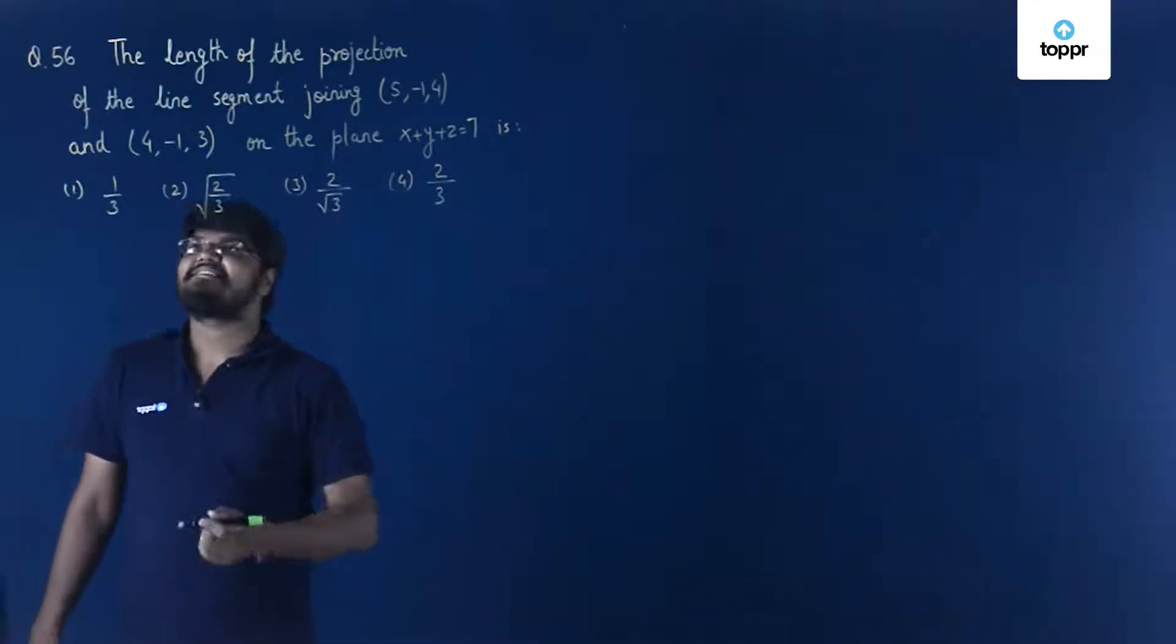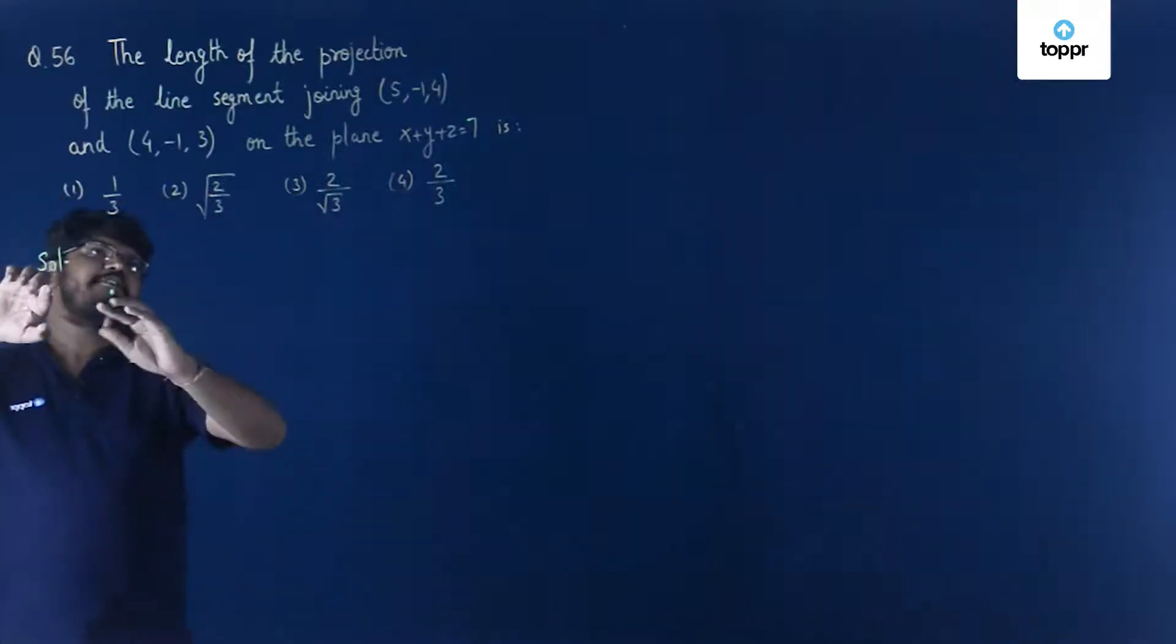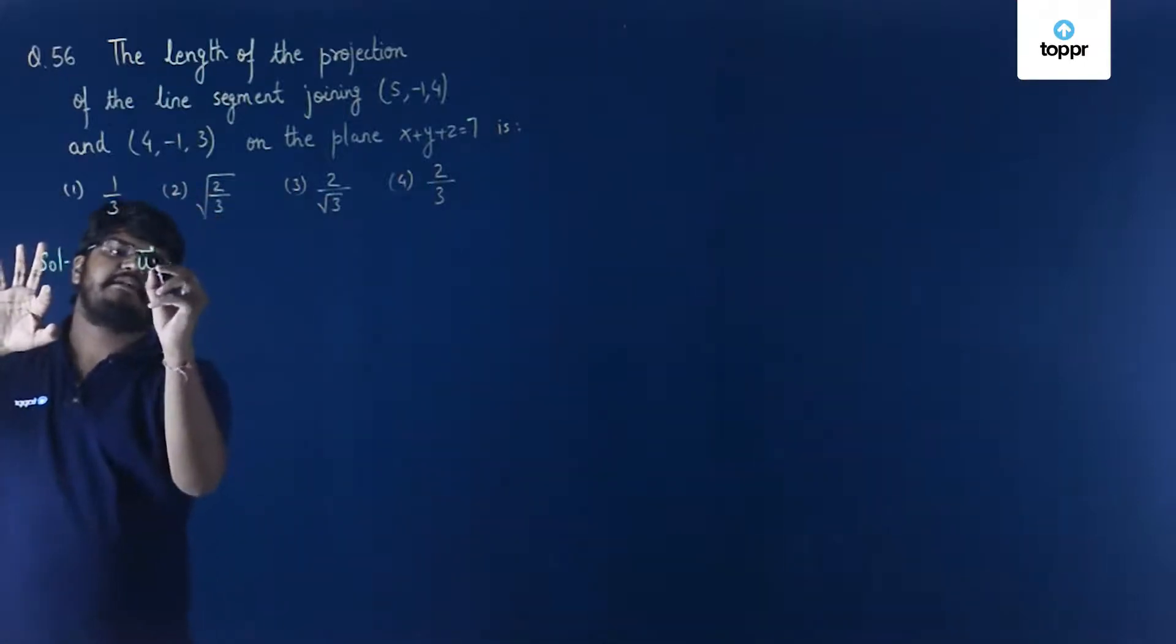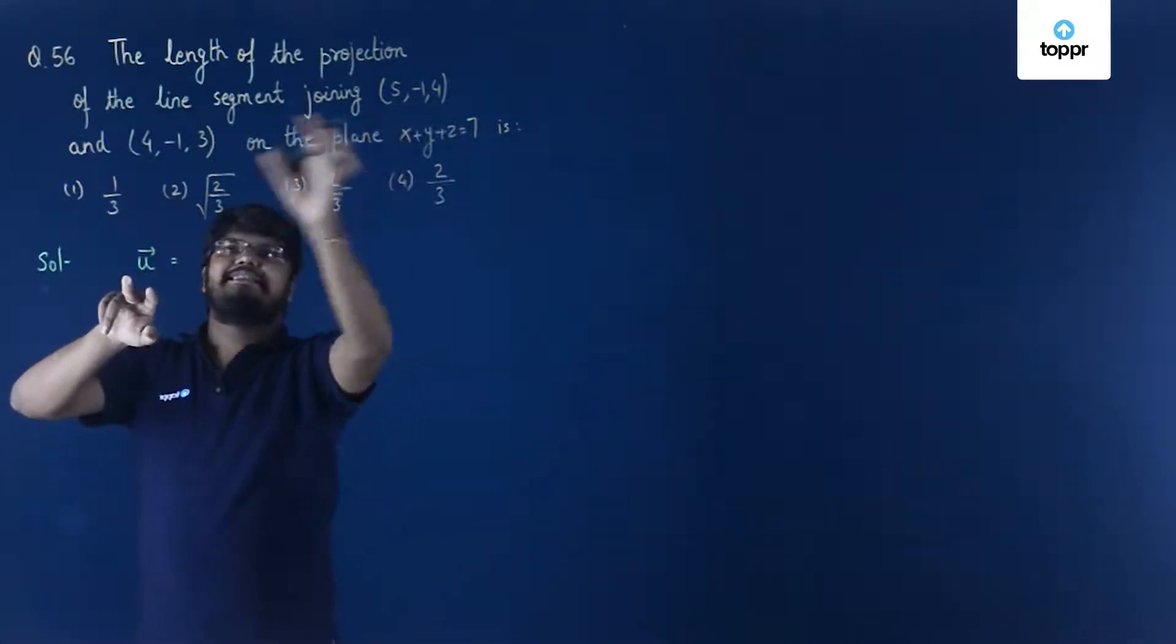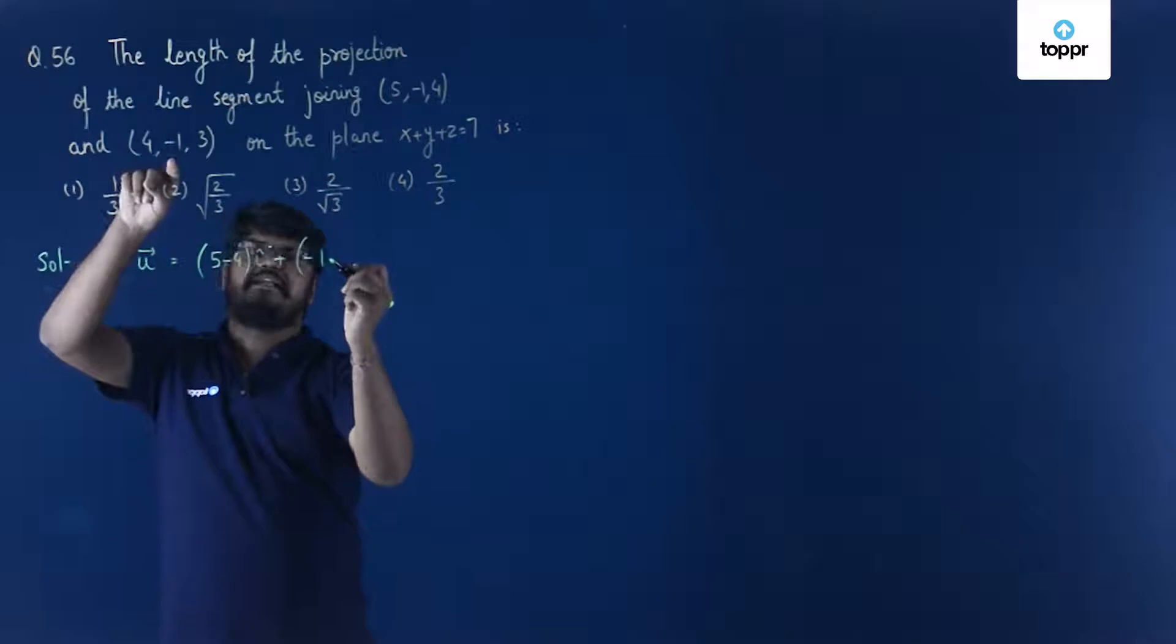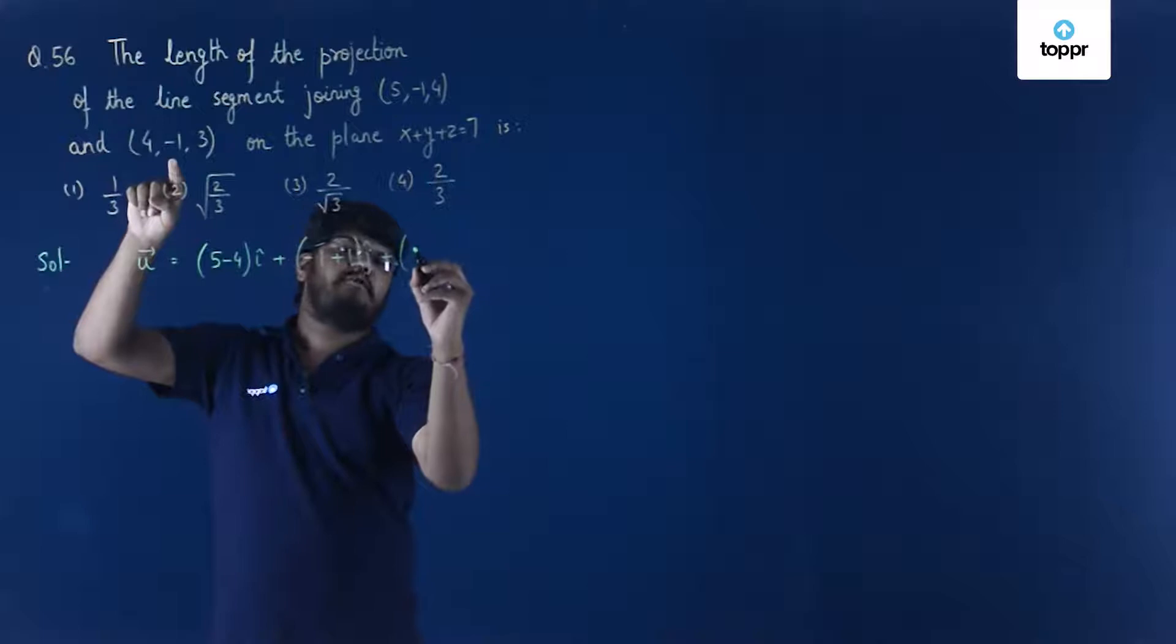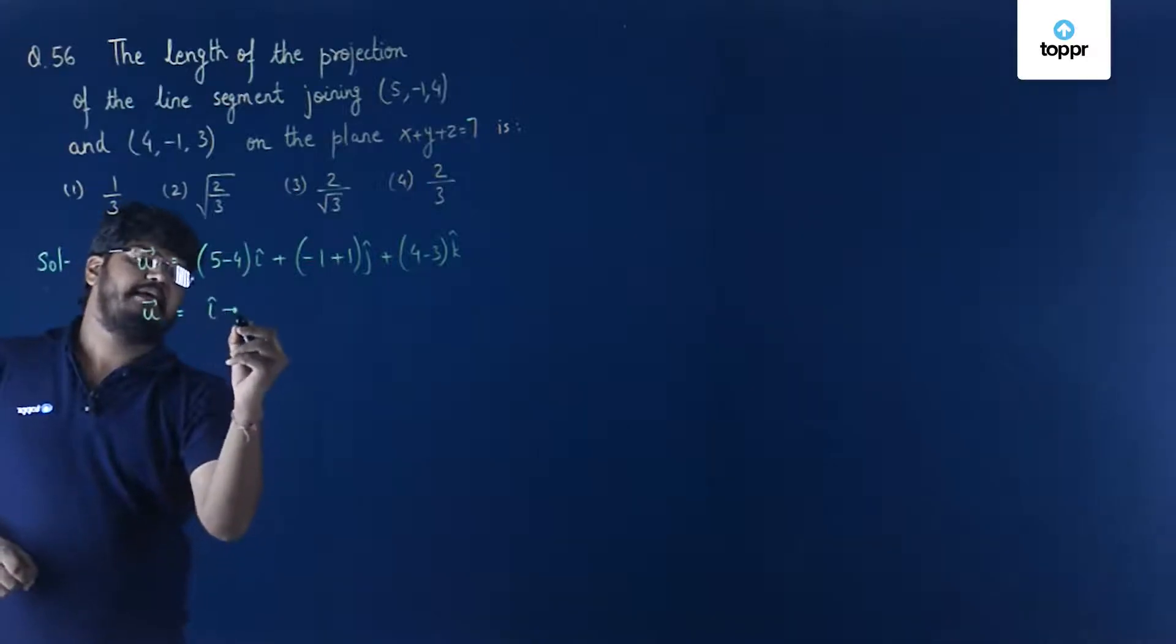The options are here with us, so let us go straight to the solution. To find the solution we need to first find the equation of this line in vector form. Let the line segment as u vector, which is formed by joining the two given points. This will make it (5-4)i cap + (-1-(-1))j cap + (4-3)k cap. So the vector will come out to be i cap + k cap.